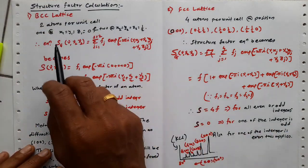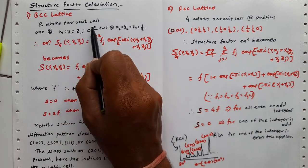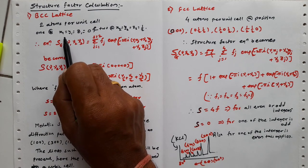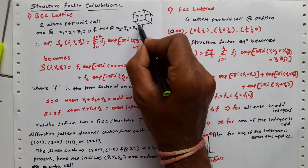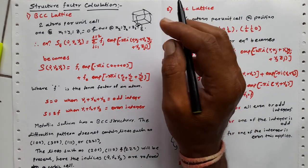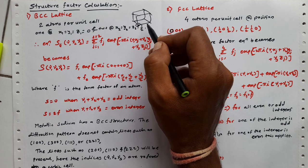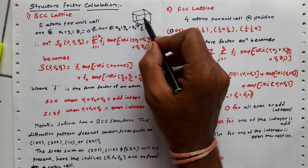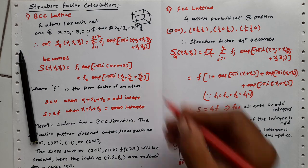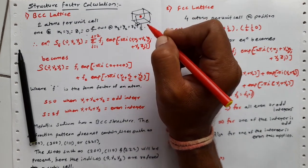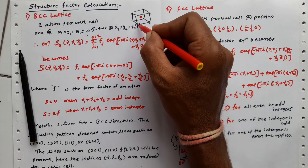In case of the BCC lattice, how many atoms per unit cell are there? There are 2 atoms per unit cell in the BCC structure. One is situated at position 0,0,0 in the cubic cell — all at the corners. The other atom is situated at the center of the cube, at position half, half, half, where x2, y2, and z2 are at equal distances from the reference point.